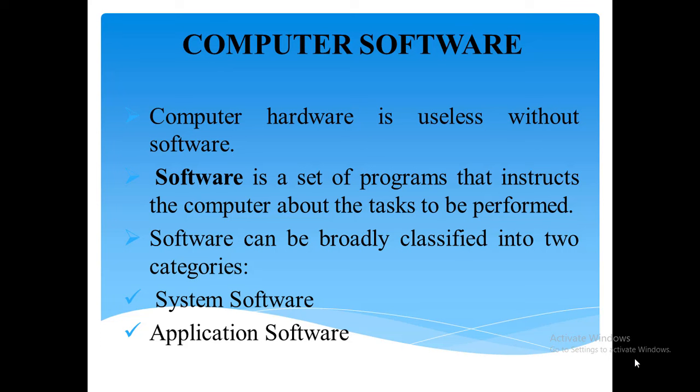Different sets of software can be loaded on the same hardware to perform different kinds of tasks. For example, a user can use the same computer hardware for writing a report or for running a payroll program. Software can be broadly classified into two categories.